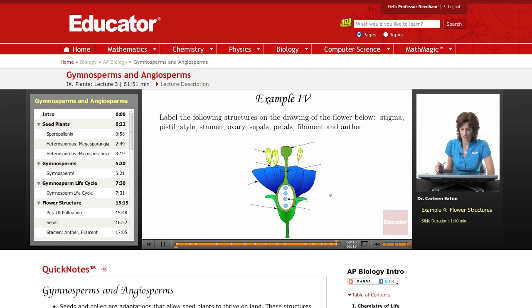Label the fine structures on the drawing of the flower below. Stigma is the part of the pistil that is sticky and pollen lands on it. It's right here at the top. That is the stigma.